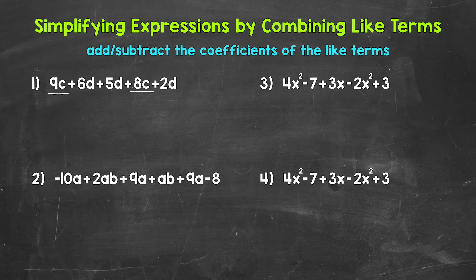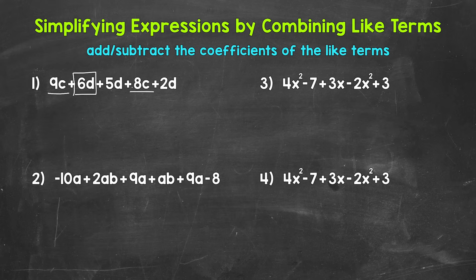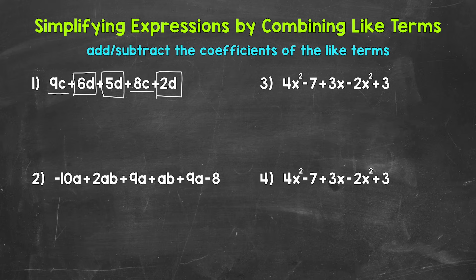Remember, when we don't have an exponent attached to a variable, there is an understood exponent of 1. Anything to the power of 1 is just itself. We also have 6d, 5d, and 2d — all of those terms have the same variable of d to the understood power of 1. Let's box those terms in to separate them. Now we can rewrite this expression with the like terms next to each other, which will help us organize the expression and make combining like terms a little simpler.